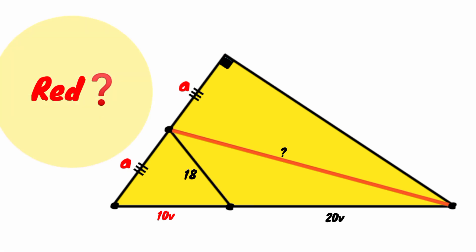Hi friends, welcome back to another interesting question. We are asked to calculate the length of this red line segment. We have the length of this line segment to be 18 units. These two line segments are congruent.